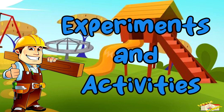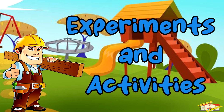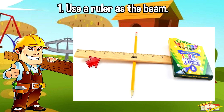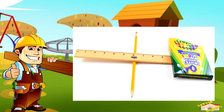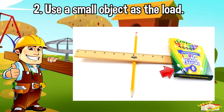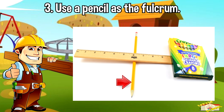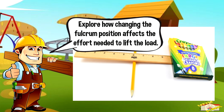Let's try an experiment — let's build a lever! Step 1: use a ruler as the beam. Step 2: use a small object as the load. Step 3: use a pencil as the fulcrum. Explore how changing the fulcrum position affects the effort needed to lift the load.